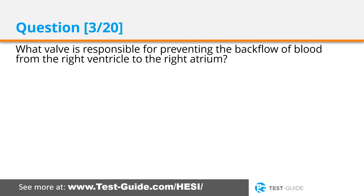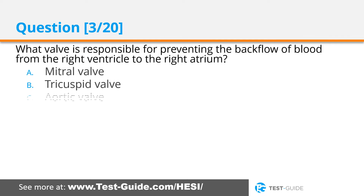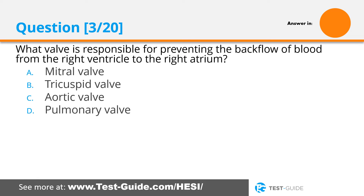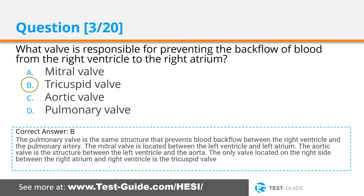Question three: What valve is responsible for preventing the backflow of blood from the right ventricle to the right atrium? Options: mitral valve, tricuspid valve, aortic valve, pulmonary valve. Correct answer B. The tricuspid valve is the only valve located on the right side between the right atrium and the right ventricle. The pulmonary valve prevents backflow between the right ventricle and the pulmonary artery. The mitral valve is between the left ventricle and left atrium, and the aortic valve is between the left ventricle and the aorta.